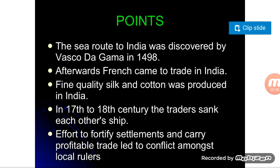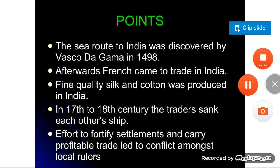In the 17th to 18th century, traders began sinking each other's ships because of competition. Everybody was coming to India for fine quality silk, cotton, muslin, gems, and spices. When they saw that competition was around, they started sinking each other's ships so that rivals would not be able to trade in India.